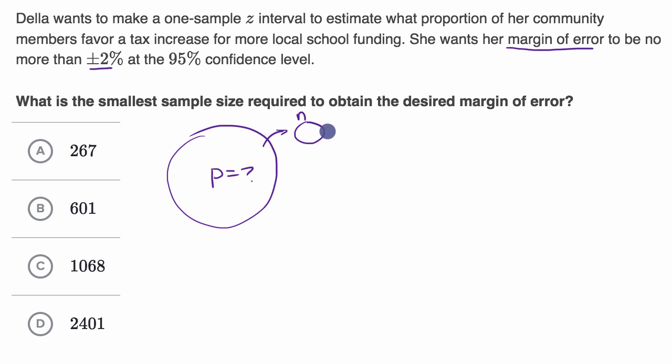Whatever sample she takes, she's going to calculate a sample proportion. The confidence interval she'll construct is going to be that sample proportion plus or minus a critical value. This critical value is based on the confidence level. What z-star, what critical value would correspond to a 95% confidence level?